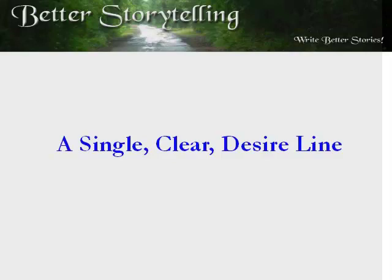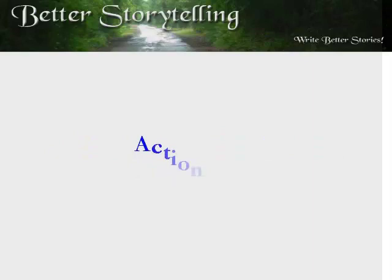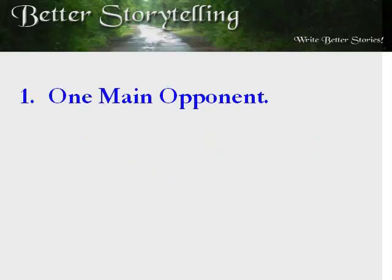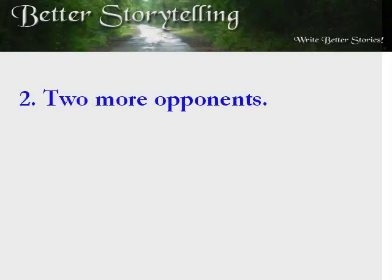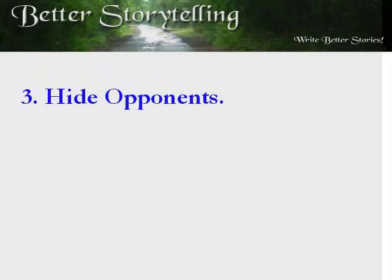Here are your action steps to broaden your story. Create multiple opponents with these steps. Step 1: Create one single main opponent. Give your opponent a system of values which define his actions. Step 2: Add at least two more opponents. How does each antagonist embody a different aspect of the story problem? Step 3: If you want more surprises, hide one of the opponents. The best villains are close to the hero. Intimate relationships that turn bad are great for conflict.